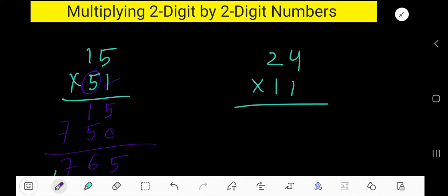Then look: 1 times 4 is 4, 1 times 2 is 2. Okay, then start with this one. 1 times 4 is 4, 1 times 2 is 2. Since 1 is in the second column, the product will come here.